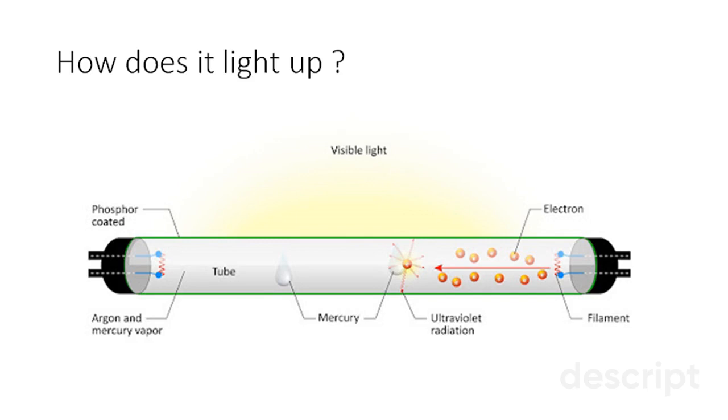This leads to the excitation of electrons and the subsequent electron relaxation to produce an invisible UV light that we actually cannot see with our naked eye. This UV light is then absorbed by the phosphor coating, which leads to excitation of more electrons.